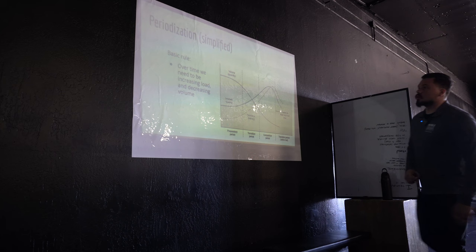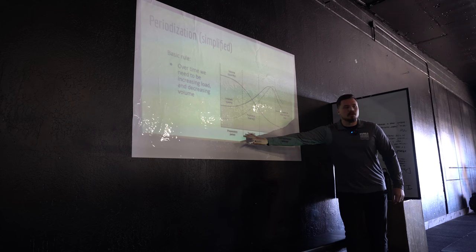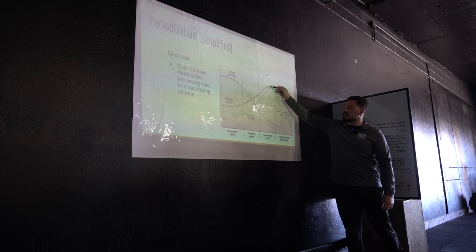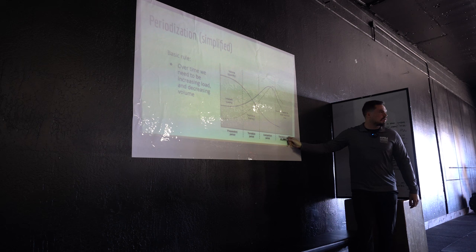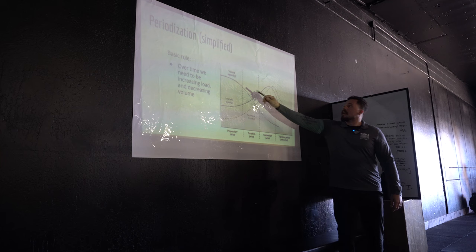A basic rule for strength training — and this also plays into hypertrophy — is to increase load and decrease volume over time. In a prep period leading toward a competition or max-out date, your intensity should be highest and your volume should be lowest at the end. If you're planning a three-month training block and want to max at the end of month three, loads should be heaviest then and volume should be lowest. To drop volume, drop the sets, drop the reps, or do a mix.